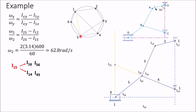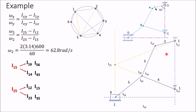Now locate I₂₅. Join 2 to 5 — line 2-5 is common to two triangles: 1-2-5 and 2-3-5. Therefore I₂₅ can be obtained by drawing line from I₁₂ to I₁₅ and another from I₂₃ to I₃₅. The line from I₁₂ to I₁₅ is drawn. The line from I₂₃ to I₃₅ is already there. The intersection of these two lines is your I₂₅.